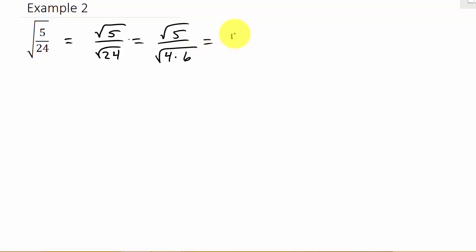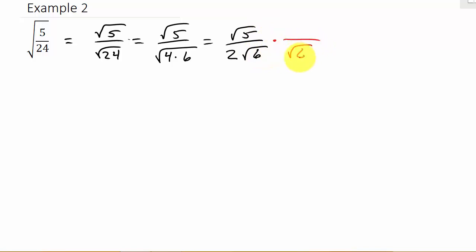So I've got square root of 5 over — the square root of 4 is 2, and then the square root of 6 is not a perfect square; it doesn't have a factor that's a perfect square, because the factors of 6 are 1, 2, 3, and 6. So the 6 has to stay under the square root. Now let's get rid of the radical in the denominator. I'm going to multiply by the square root of 6, because that will give me the square root of 36, and the square root of 36 is 6. So since I multiplied the denominator by square root of 6, I have to also multiply the numerator by square root of 6.